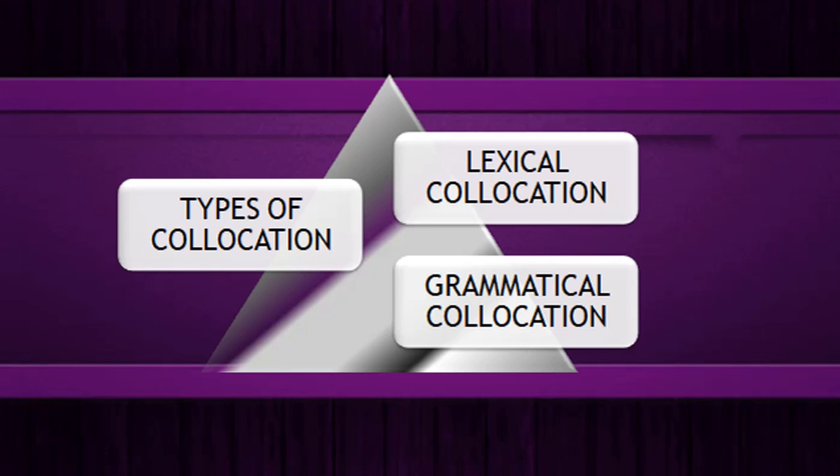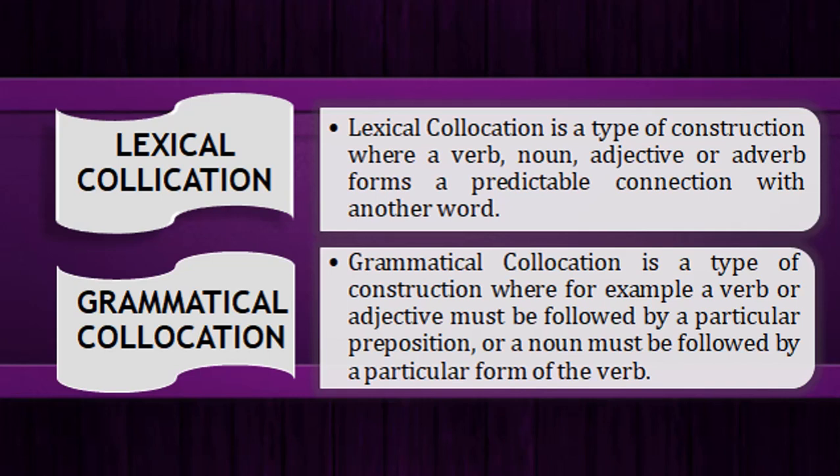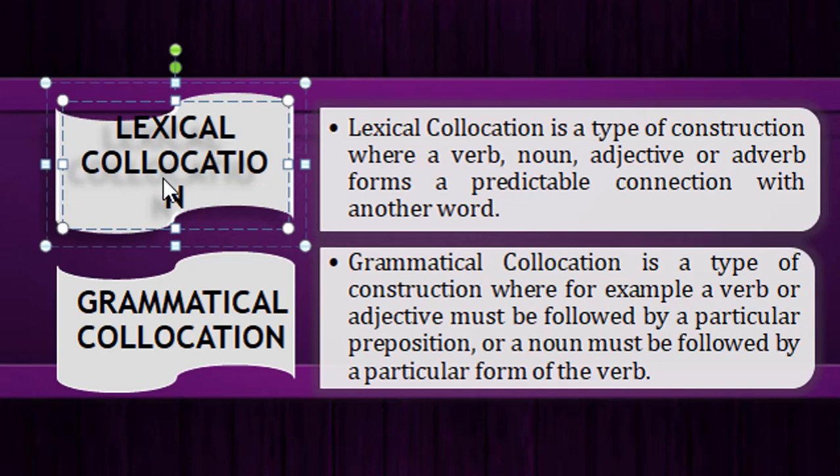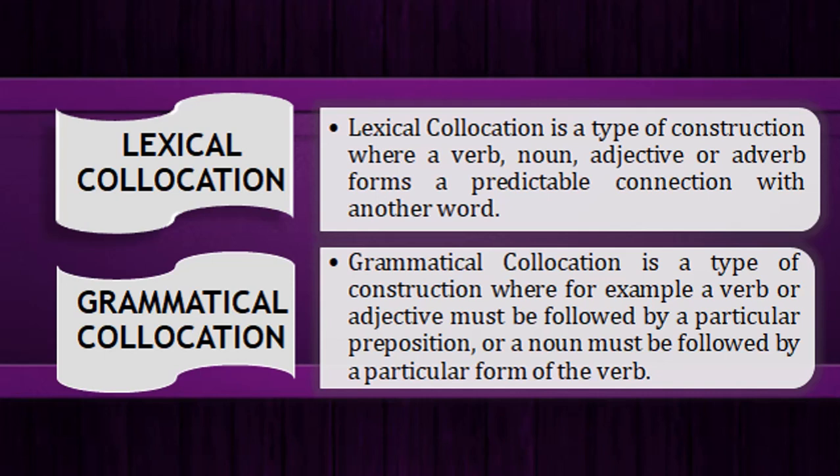Now coming to the types of collocation — as you can see on screen, there are two types: lexical collocation and grammatical collocation. Lexical collocation is a type of construction where verbs, nouns, adjectives, or adverbs — the parts of speech — join together in a predictable connection. For example, an adverb with an adjective: 'completely satisfied.' We can say 'I am completely satisfied with my work,' but we cannot say 'I am downright satisfied' — that sounds odd. So in lexical collocation, we form a predictable connection between words.